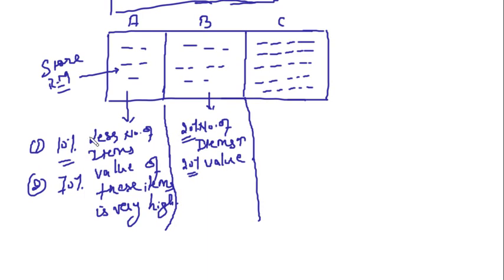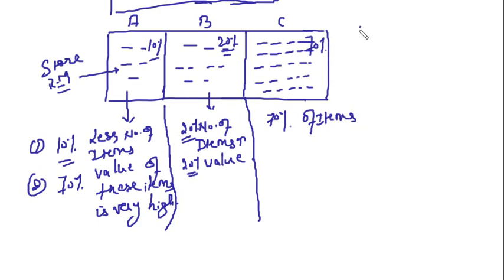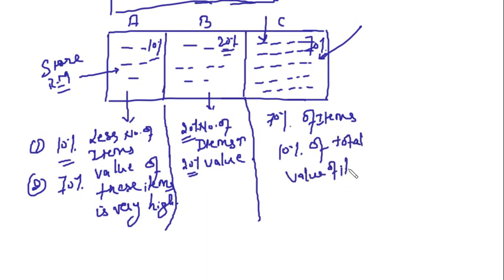Now, 10% are in A and 20% are in B, so the remaining 70% of items fall into the C block. Your maximum number of items are in C. But their value is only about 10% of the total value of all items. So these are not very valuable items — they are not high-cost items.